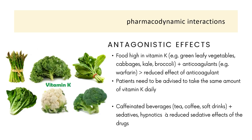In terms of pharmacodynamic interactions, we might expect interactions with vegetables that contain high vitamin K with anticoagulants, in which vitamin K might reduce the effect of anticoagulants. Patients need to be advised to take the same amount of vegetables containing high levels of vitamin K daily; otherwise, there will be changes in the effect of the anticoagulant itself.